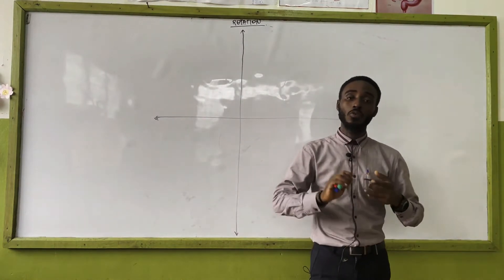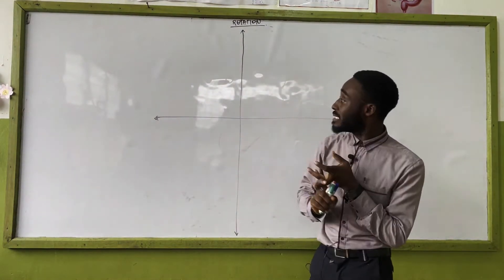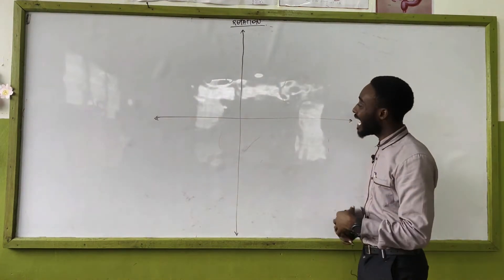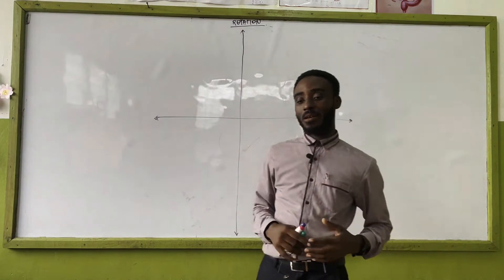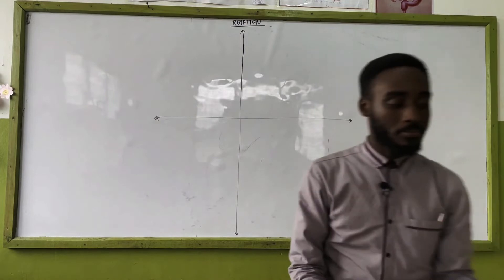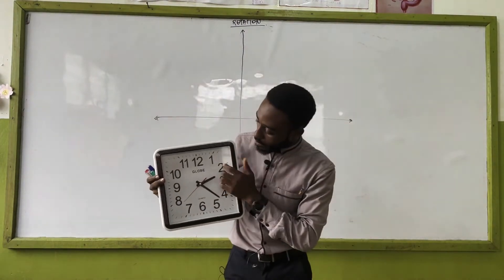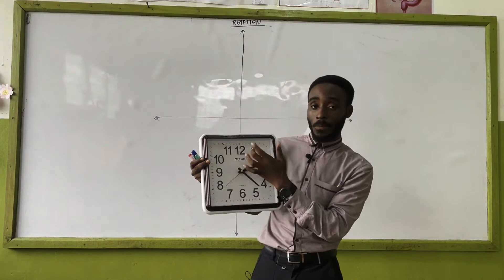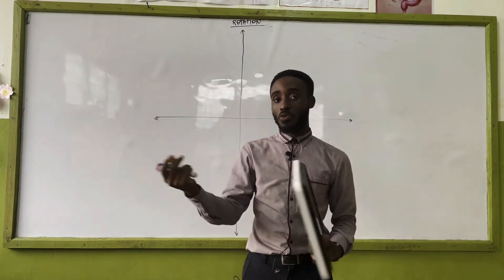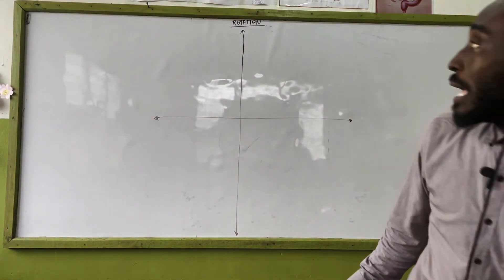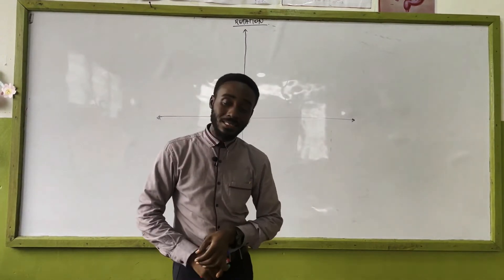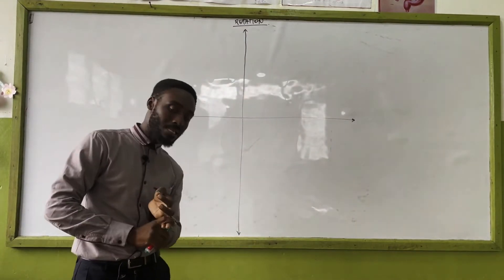Today's lesson we are talking about rotations. We said we'd have to look at three things: the direction, the origin or center of rotation, and the angle of rotation. These three elements are very key. Quick recap: the clockwise movement goes 12, 1, 2, 3, 4 — and anti-clockwise goes the other way. We'll be looking at angles 90, 180, and 270.